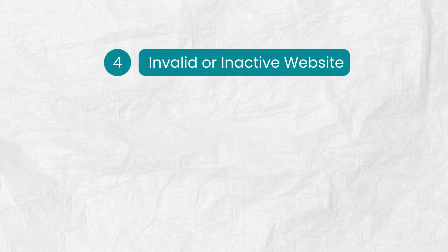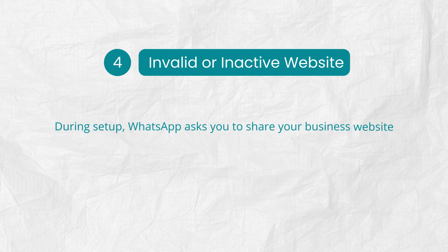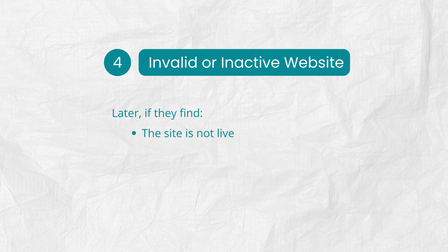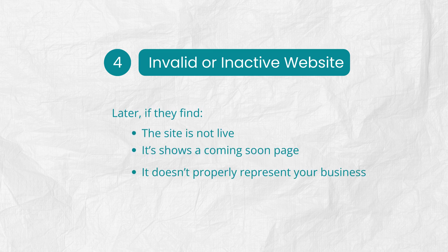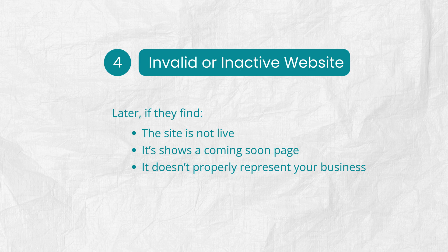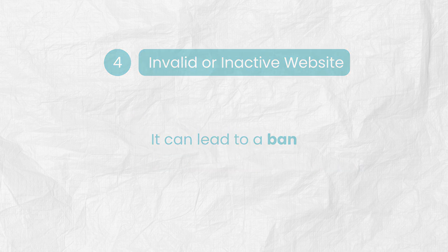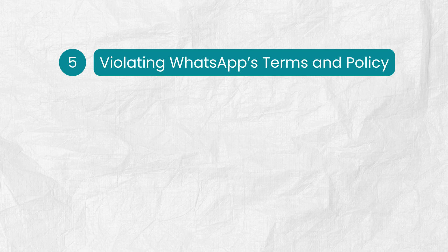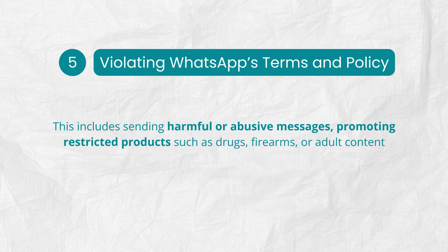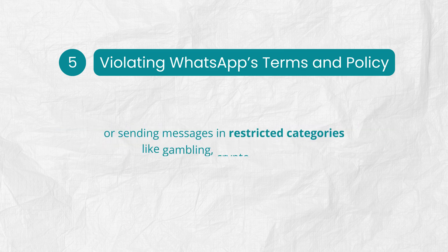Your account may also get disabled because of the lack of a live website. During setup, WhatsApp asks you to share your business website. Later, if they find the site is not live, shows a coming soon page, or doesn't properly represent your business, it can lead to a ban. Finally, there's the violation of WhatsApp's general terms and commerce policy. This includes sending harmful or abusive messages, promoting restricted products such as drugs, firearms, or adult content, or sending messages in restricted categories like gambling, crypto, or others.